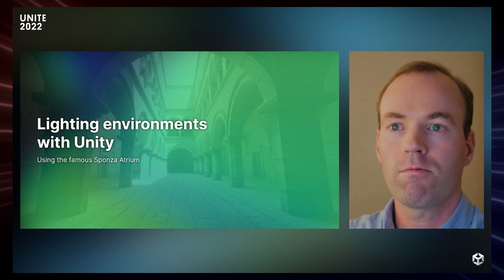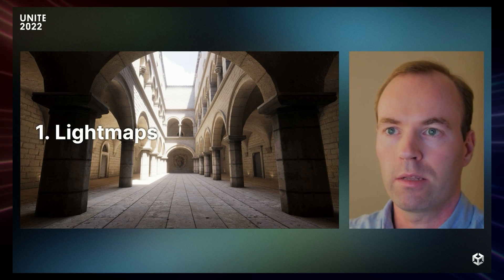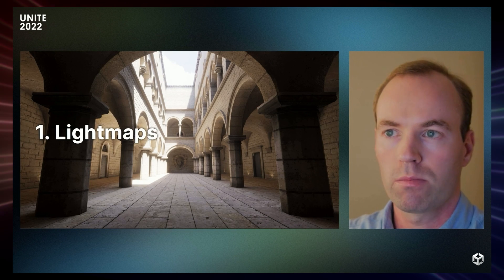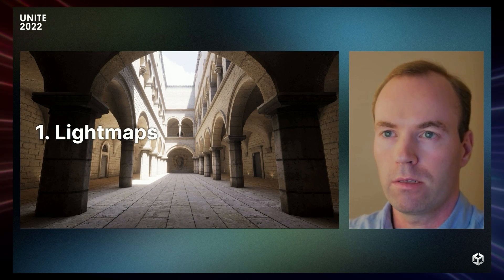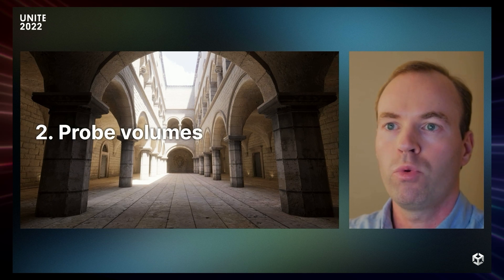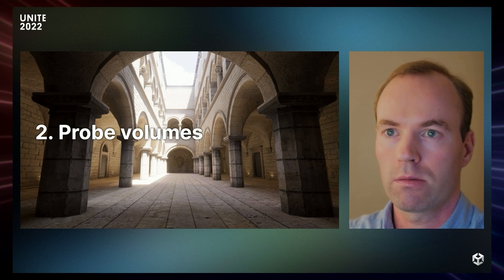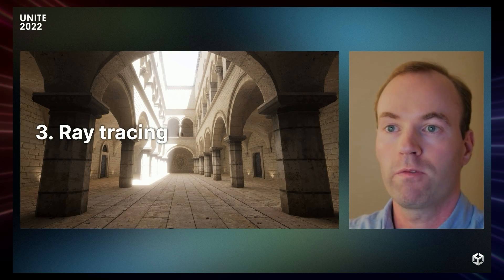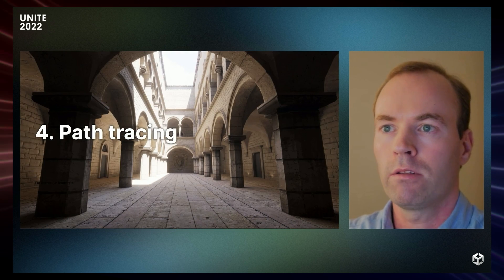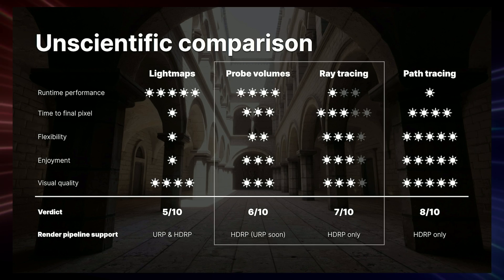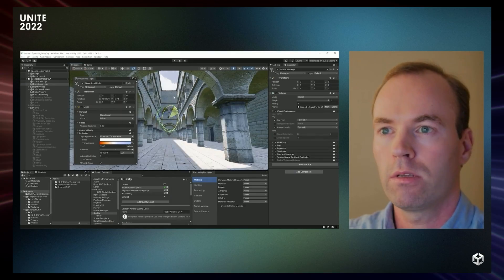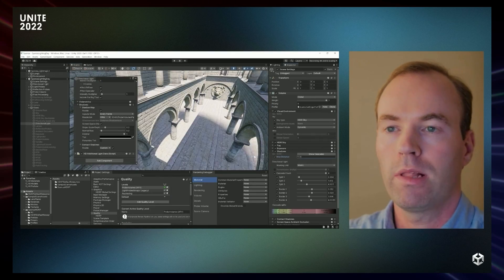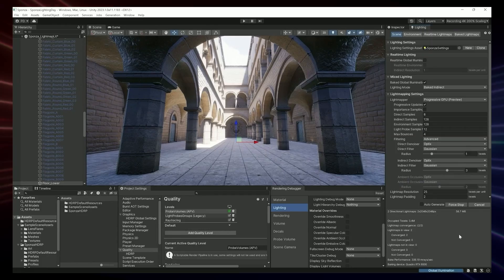In the 'How to Light Your Environment with Unity' talk, you can see how light maps and reflective probes, camera exposure, adaptive probe volumes, ray tracing, and path tracing can be mixed and matched to create impeccable lighting based on the render pipeline and platform you're catering to.